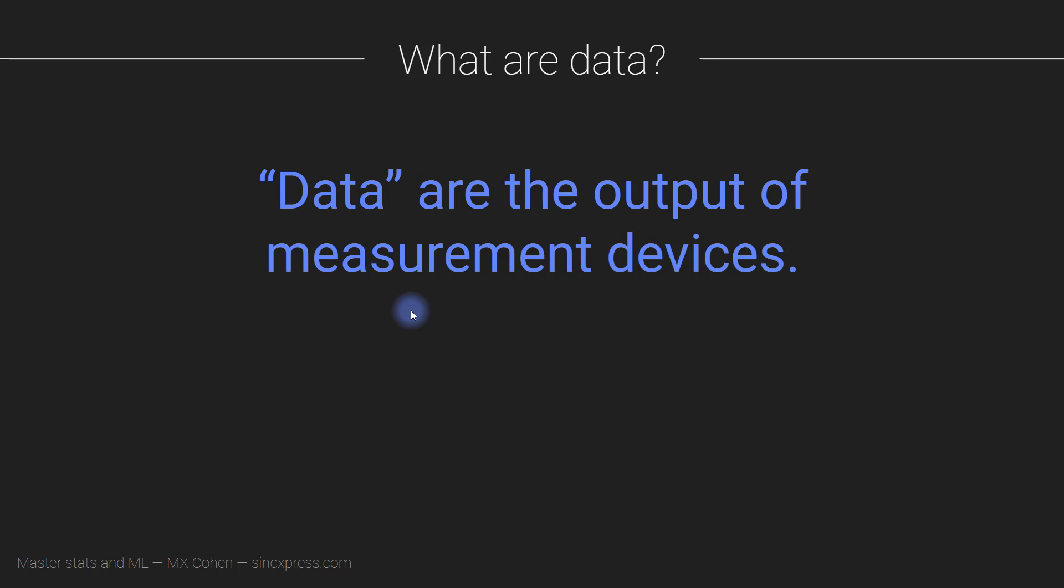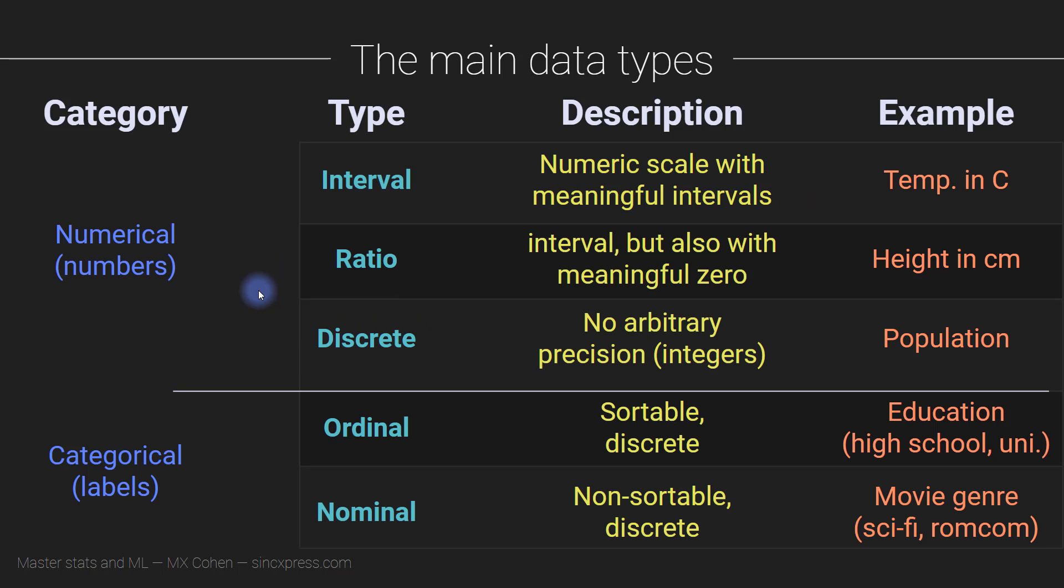Now, data are not homogenous, there's different types of data. Very broadly speaking, we group data into categories. And the two main categories are numerical.